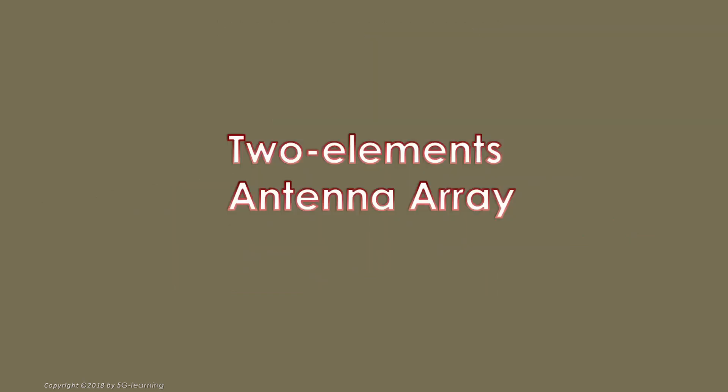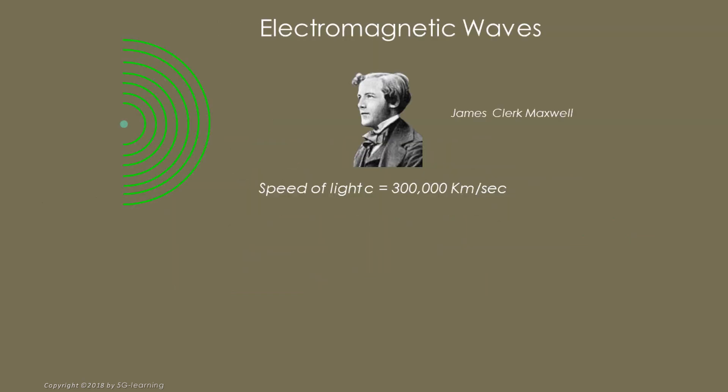Two elements antenna array. In 1865, the theoretical physicist James Clerk Maxwell predicted the existence of electromagnetic waves capable of traveling through space at the speed of light. 21 years later, Heinrich Hertz observed these waves for the first time in his laboratory.